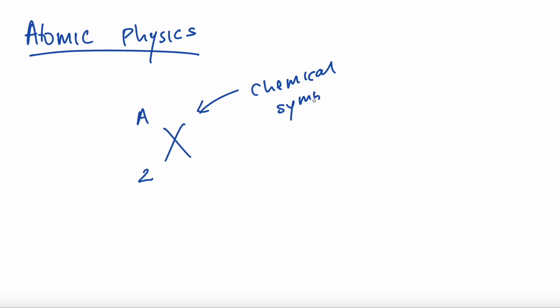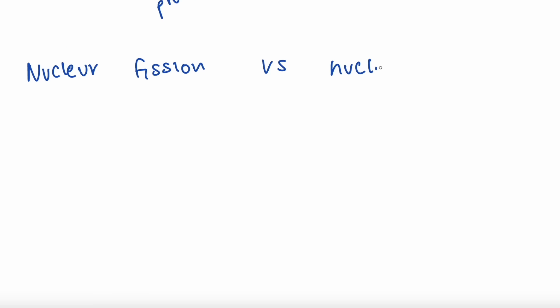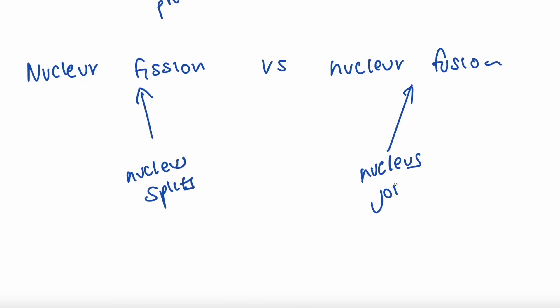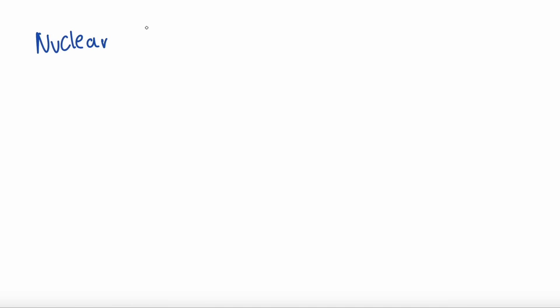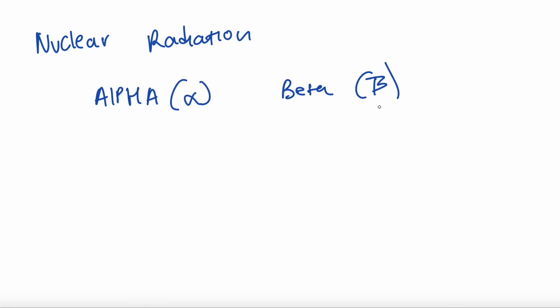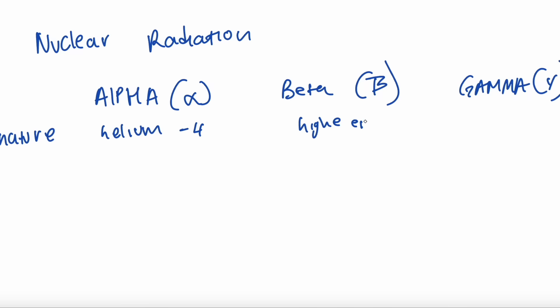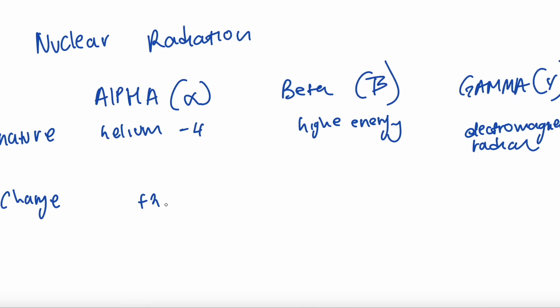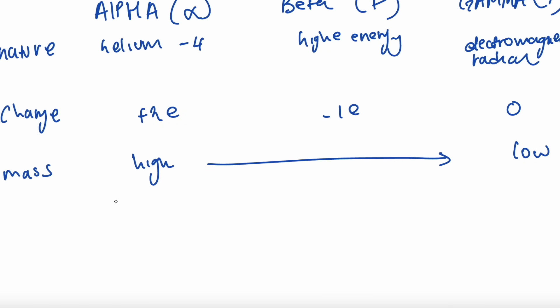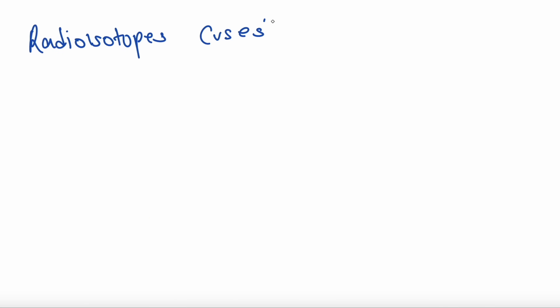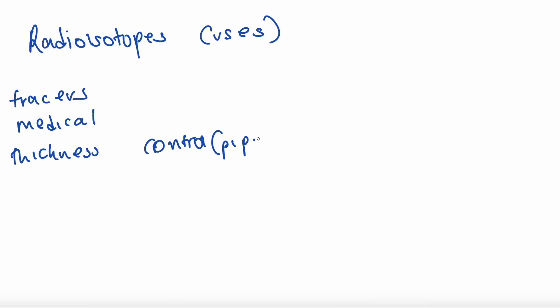Let's have a look at atomic physics, starting with the structure of an element: we have the chemical symbol, nucleon number, and proton number. Fission is when the nucleus splits, and fusion is when it joins. Nuclear radiation includes alpha, beta, and gamma. Alpha is a helium nucleus with charge +2 and mass 4; beta is a high-energy electron with charge -1; and gamma is electromagnetic radiation with charge 0. Mass goes from high to low, and penetration from low to high across alpha, beta, and gamma.